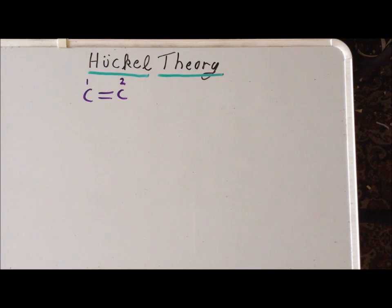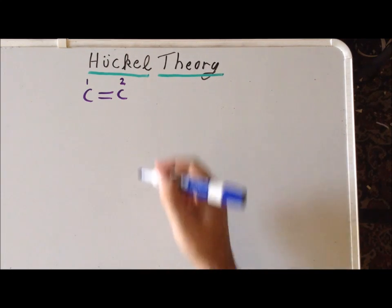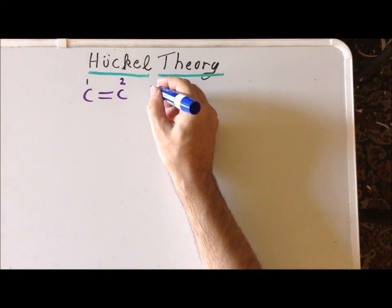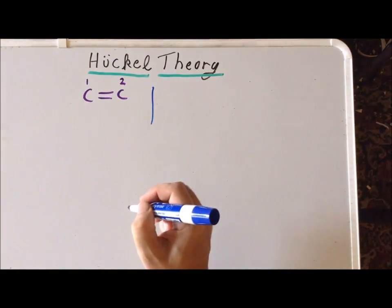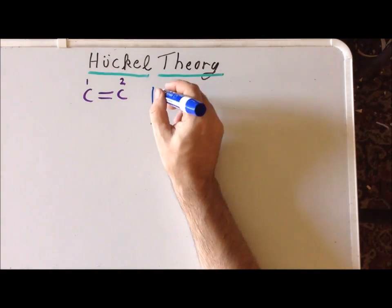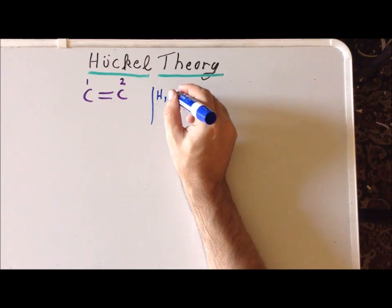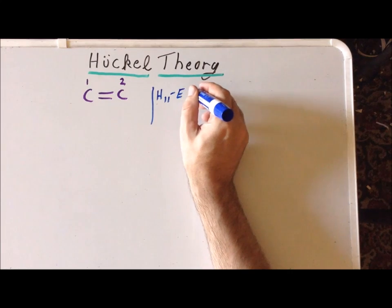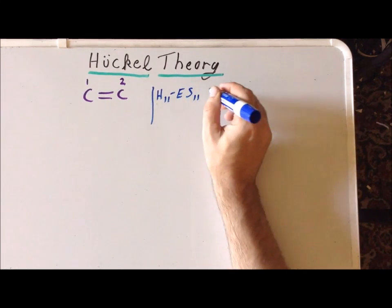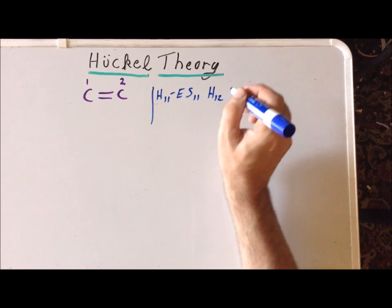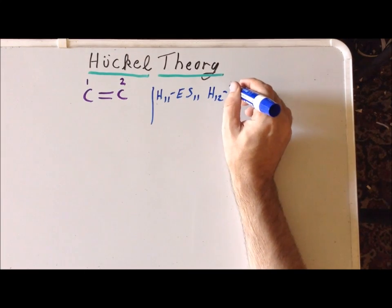Also recall that by the variational principle, we can find the energies of a system of molecular orbitals by solving this particular determinant. This is the case where we have two molecular orbitals involved.